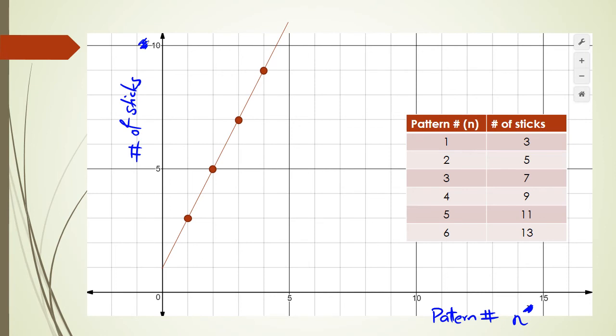Because by drawing the line, you're actually saying that this is a continuous set of data, but it's not. It's discrete. And for those of you that don't know what discrete or continuous are, discrete is, in this case, you can't actually have pattern 1.5.